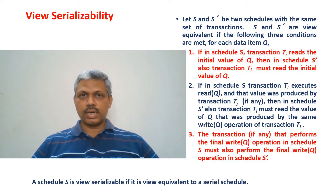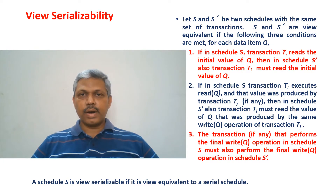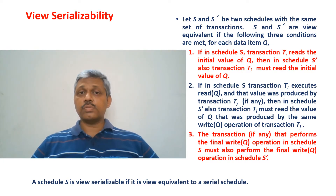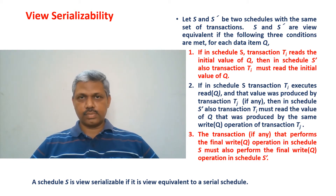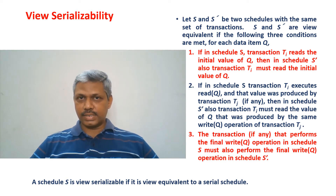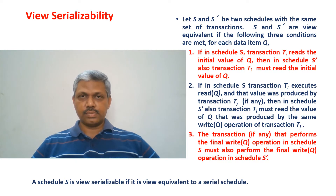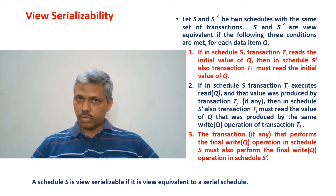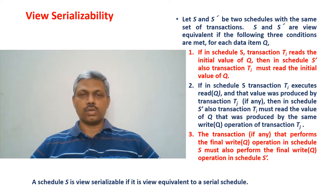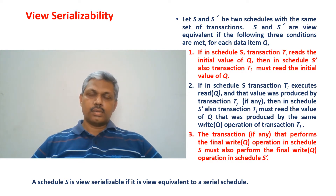The second condition says that if a particular database object Q is read by transaction TI, which was written before by TJ, and it happens in S, the same thing should also happen in S'. That means TI should also read the same database object value produced by TJ in S' as well. That is the second condition.